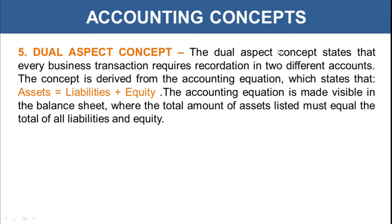Then there is the dual aspect concept. It states that every business transaction requires recordation in two different accounts. This concept is derived from the accounting equation: Assets = Liabilities + Equity. Every debit will have a corresponding credit account, and thus the asset side should equal the liabilities side. In the balance sheet, the total assets must always equal the combination of liabilities and equity.